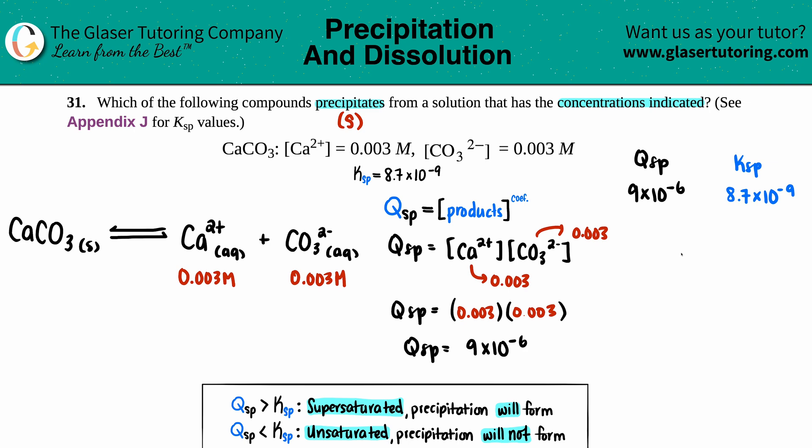When you're comparing values, the first thing you should always look for is the exponents. Are they different? We have 10⁻⁶ versus 10⁻⁹. They're different, so I don't even have to look at these front numbers. I can find out which one is greater just by looking at the exponents. Negative 6 is greater than negative 9 on a number line.